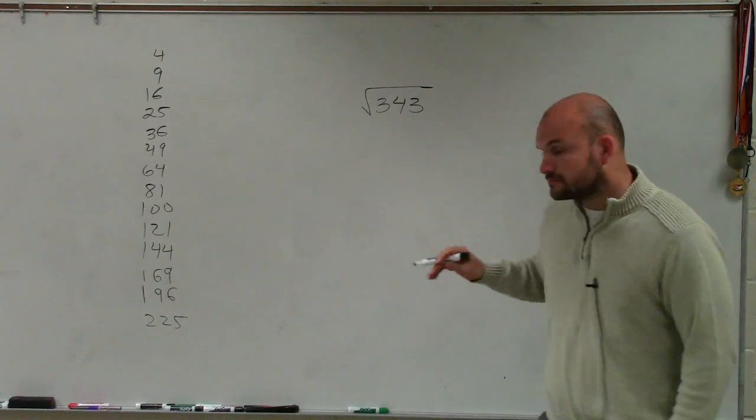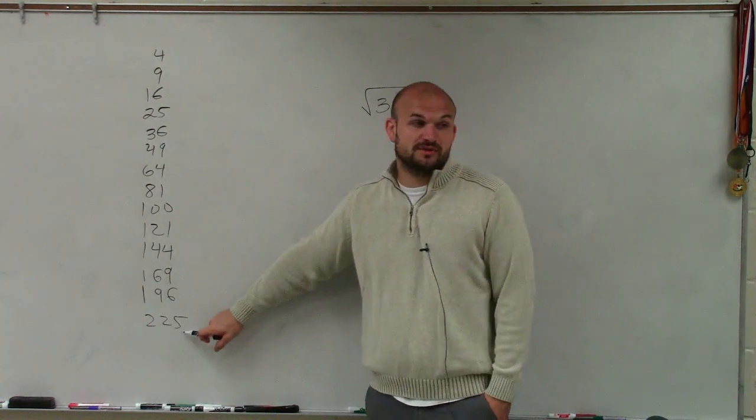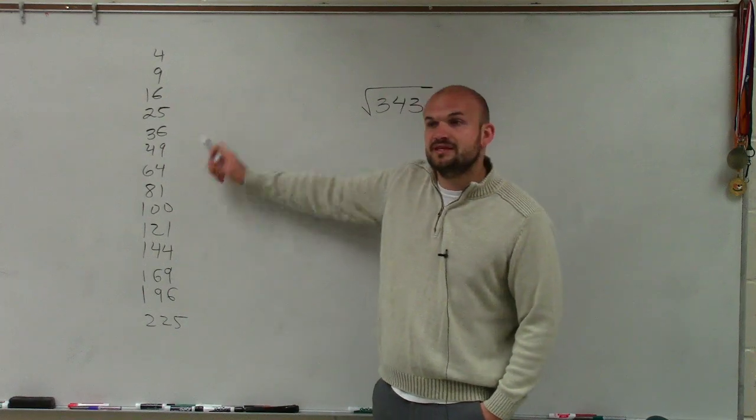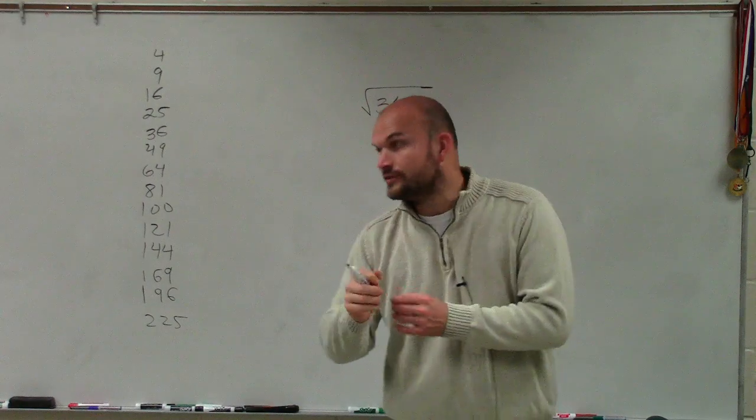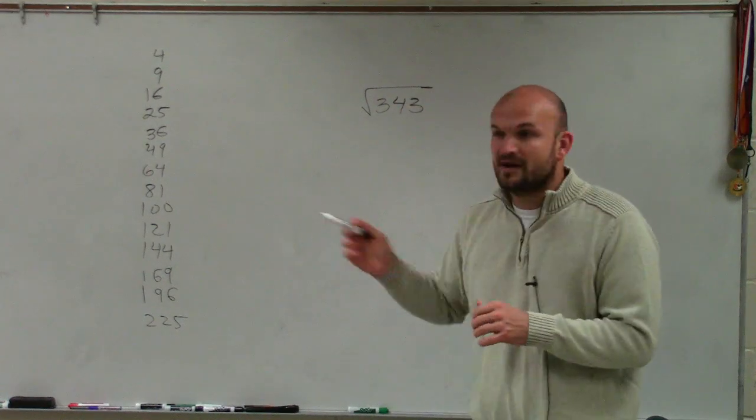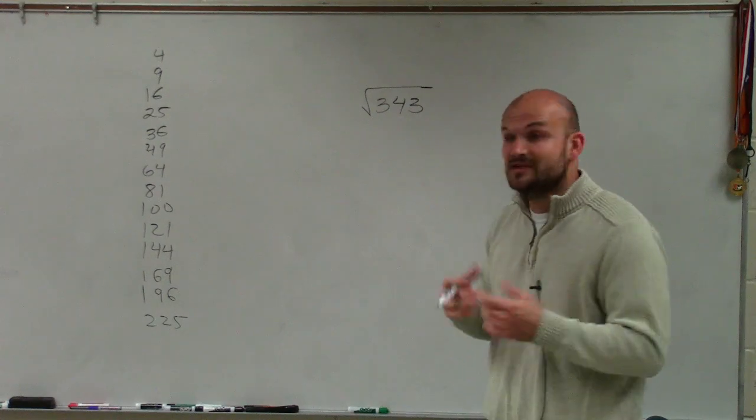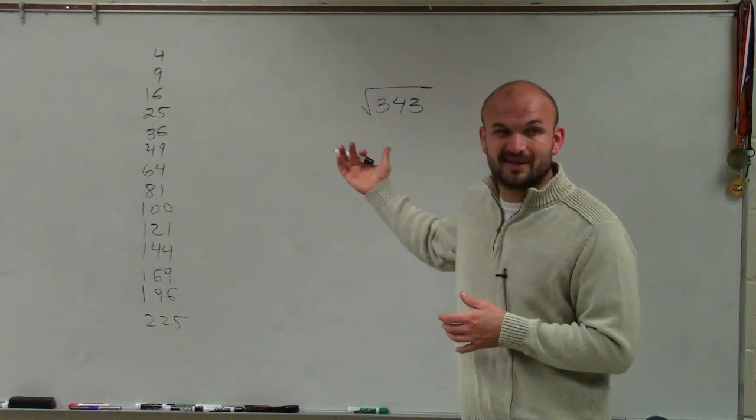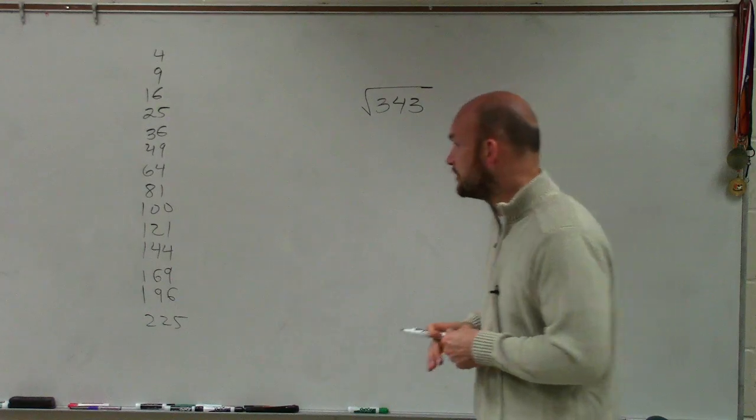So when you're looking at this, what I would do is see which of these numbers, starting with the largest, is going to evenly divide into 343. Literally just take your calculator and say 343 divided by 225, 343 divided by 196, 343 divided by 169. When you have a large number like this, it might not be as apparent what exactly is going to be your square number.